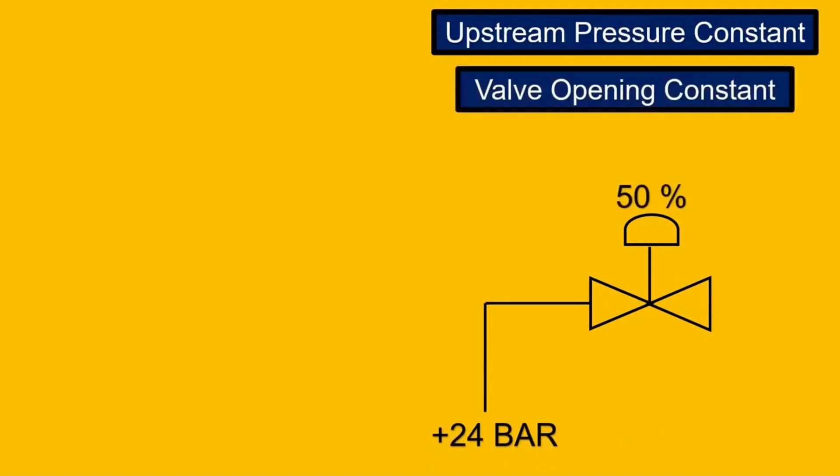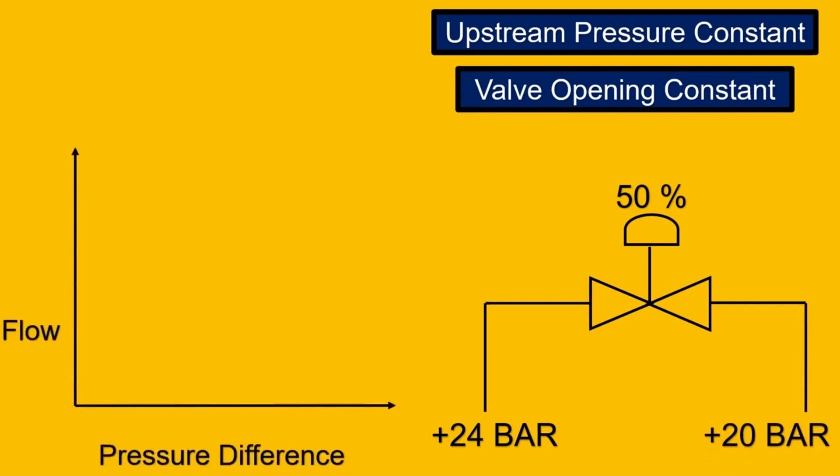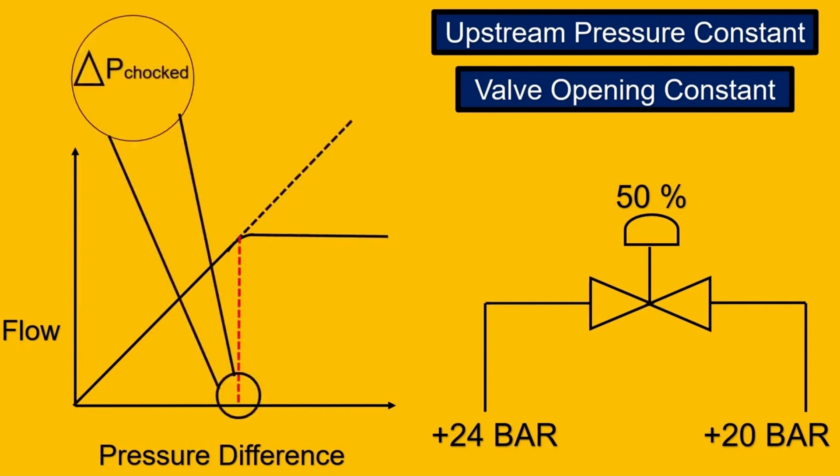For example, let's say 50 percent opening, and we keep increasing or decreasing the downstream pressure like 20 bar, 19 bar, 18 bar and we try to plot a graph. We'll be getting a linear characteristic. Eventually it could happen that you reach a point where the pressure difference is not allowing the flow to increase and this point is called the del P choked.